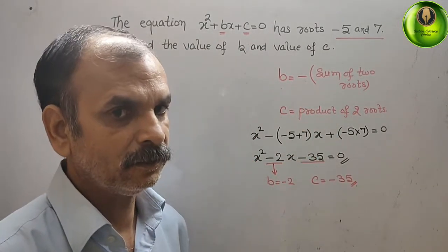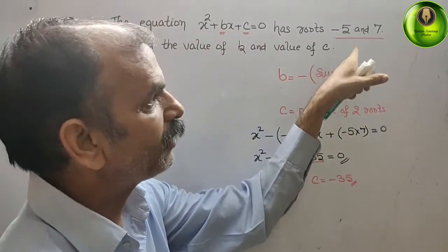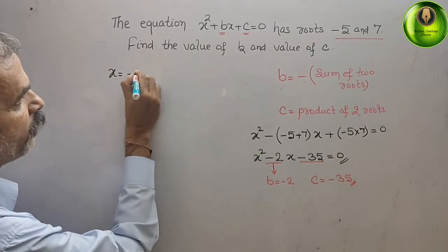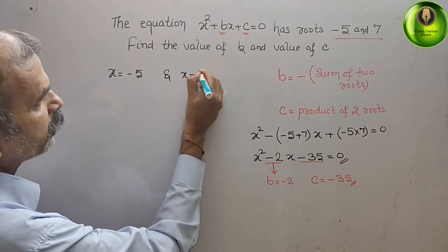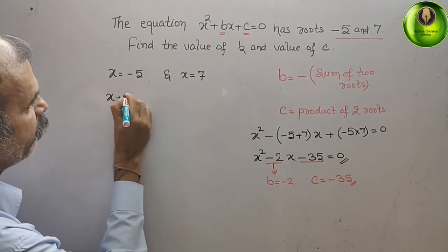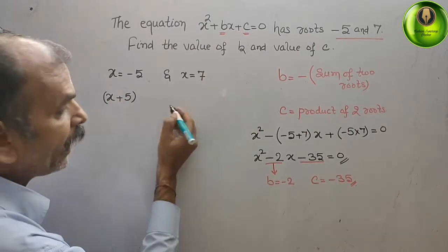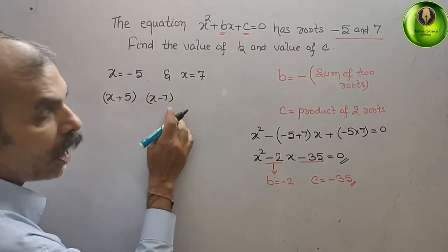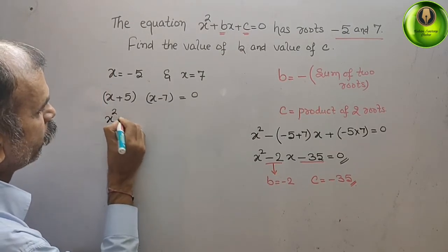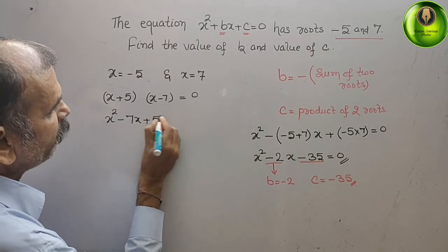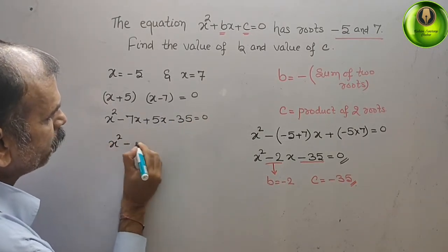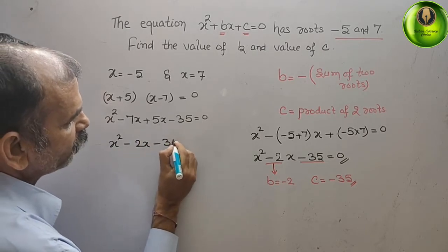Now we will go for the long method. They have given the roots as minus 5 and 7, meaning those are the values of x. So x equals minus 5 and x equals 7. Bring the constant to the left side: you get x plus 5 and x minus 7. Multiply them equal to 0. You will get x squared minus 7x plus 5x minus 35 equals 0. Solving: x squared minus 2x minus 35 equals 0.